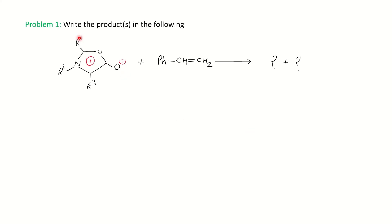We will see our very first problem. The question is: write the product in the following reaction. The reaction given has a five-membered heterocycle. As the name suggests, a hetero atom must be present in the cyclic ring. Here you can see nitrogen and oxygen, so it is a heterocyclic compound, and we are looking at its reaction with an alkene.